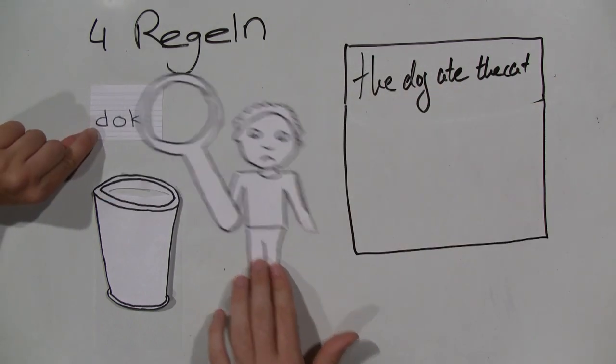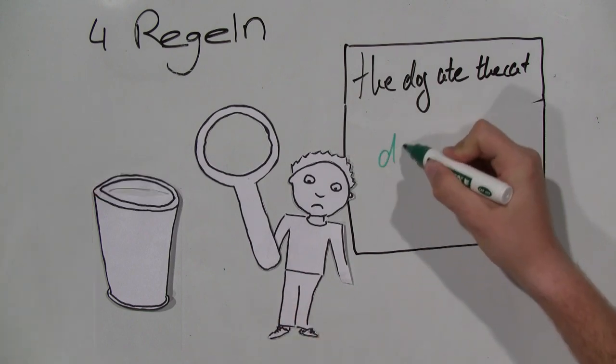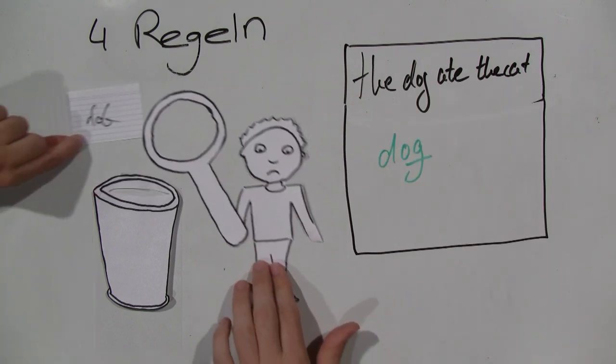Rule three, avoid mistakes, for example, misspelling. Rule four, use a clear handwriting.